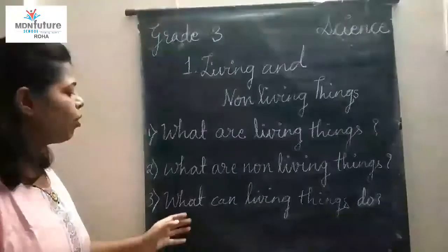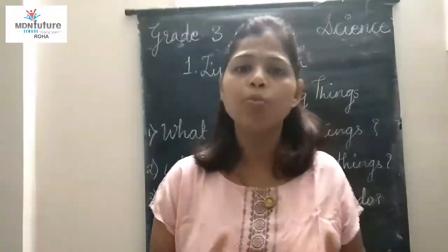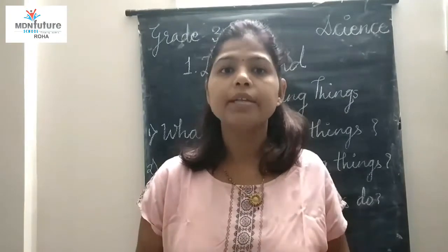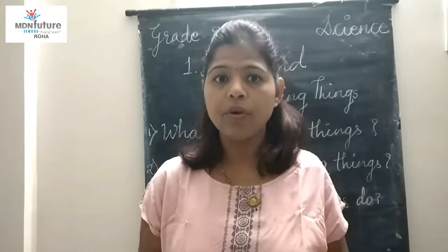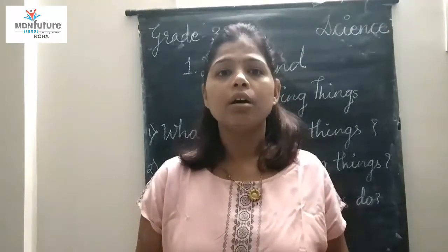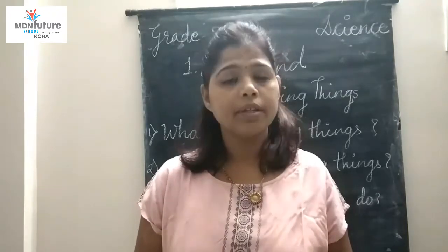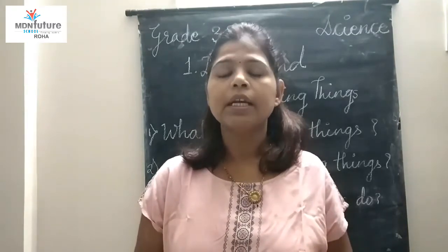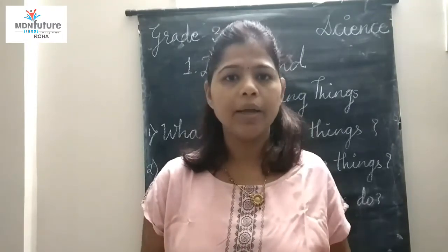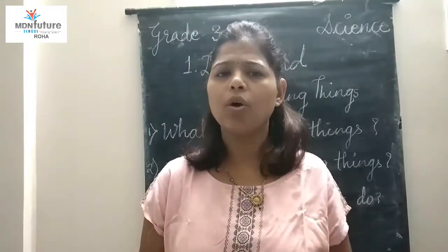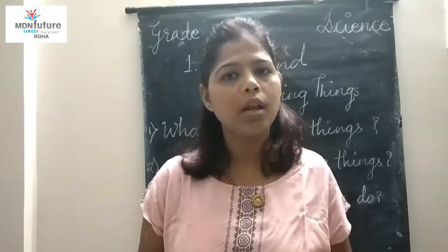So, the third question is: what can living things do? Living things move from one place to another. Living things need food to grow. Living things breathe to survive. Living things feel — meaning they give a response to stimuli. Living things give birth to their young ones. Living things grow old and then die. But non-living things cannot do all these things because they do not have life.